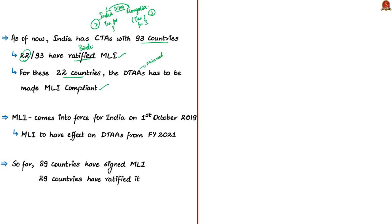This convention will come into force for India on 1st October 2019, and the provisions of MLI will have effect on India's double taxation avoidance agreements from financial year 2021. So far, 89 countries have signed this convention and 29 countries have ratified it. India is one among these 29 countries since 25th June 2019.